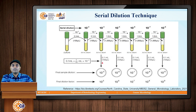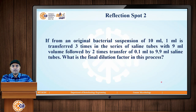Now when we perform these serial dilutions, the dilution factors would be considered accordingly — 10 raise to 5, 10 raise to 6, 10 raise to 7. If from an original bacterial suspension of 10 ml, 1 ml is transferred 3 times in a series of saline tubes with 9 ml volume, followed by 2 times transfer of 0.1 ml to 9.9 ml saline tubes, what will be the dilution factor in this process?